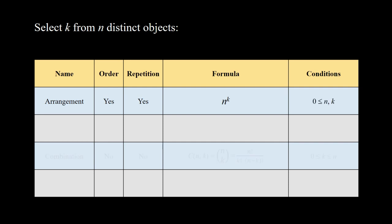The condition for arrangement is 0 ≤ n and also k. The second one is permutation: here the order is also important but repetition is not allowed. The formula is n factorial over n minus k factorial, denoted P(n,k). The condition is 0 ≤ k ≤ n.